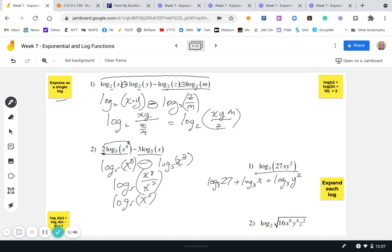Are we done? Close. We can still expand this by taking the exponent and moving it out front. So we can say log base three of 27 plus log base three of x plus two log base three of y. We took the exponent and moved it out front.